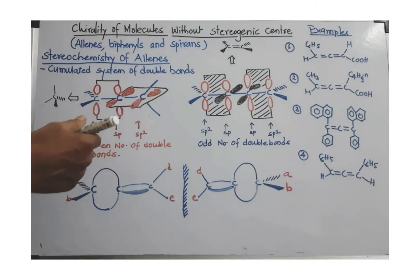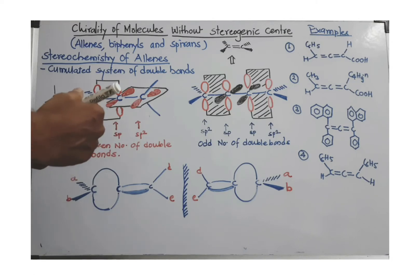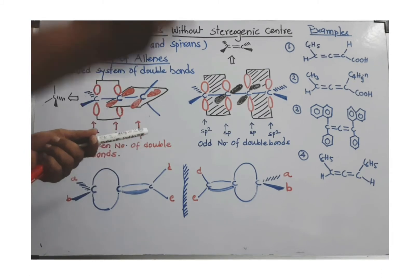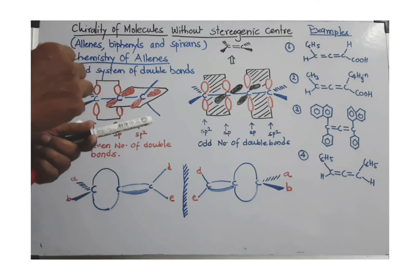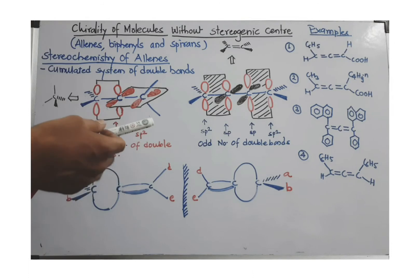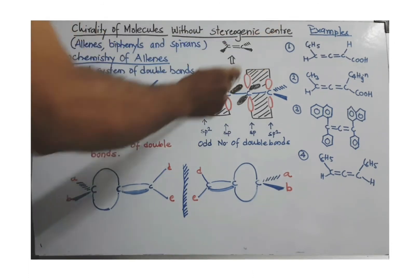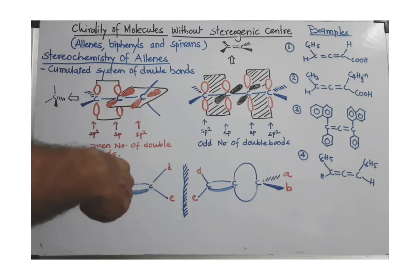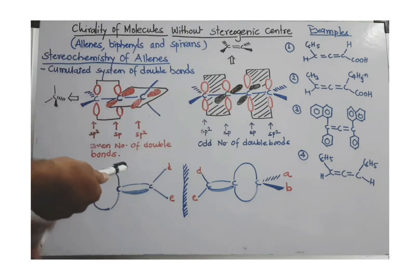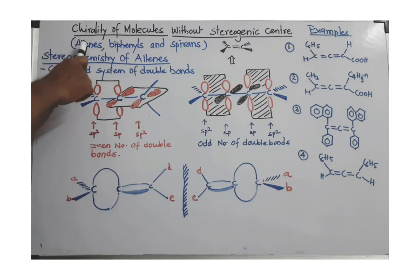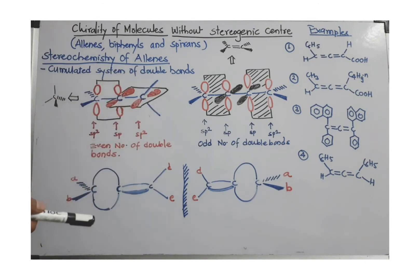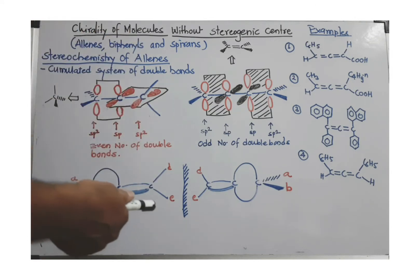Chirality of molecules without a stereogenic center. In previous videos we have seen that if a stereogenic center or chiral carbon is present in a molecule and elements of symmetry are not present, that molecule can show optical activity. Here we are discussing molecules which do not have a stereogenic center or chiral carbon, yet can still show optical activity. These molecules have molecular chirality, and the whole molecule is dissymmetric.